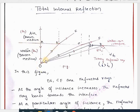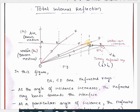Consider ray OB going from the denser medium (water) to the rarer medium (air). Since light is moving from denser to rarer medium, it bends away from the normal. If we increase the angle of incidence slightly more, as with ray OC, the ray bends even more. As the angle of incidence increases, the angle of refraction also increases.